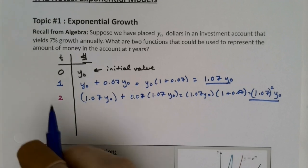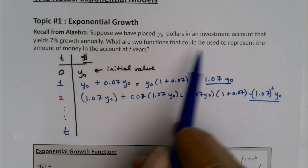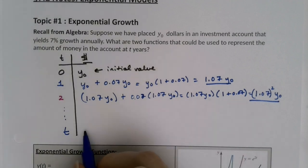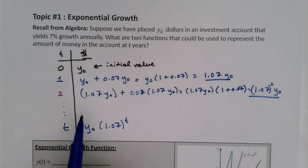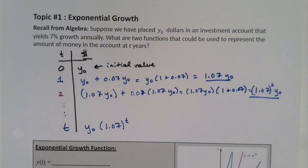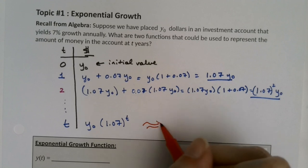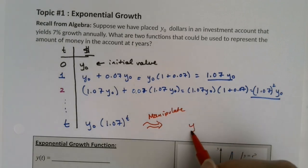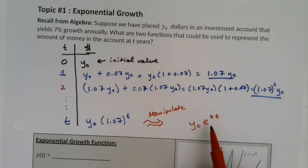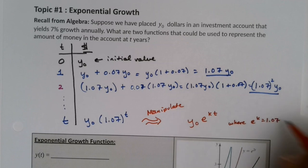So we've learned that for T years, two functions that represent the amount of money in the account would be Y-zero times 1.07 to the T. They want two equations because we can manipulate this into another one: Y-zero times e to the kT, where k varies such that e to the k equals 1.07.